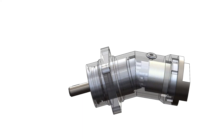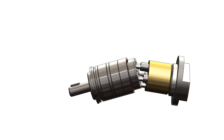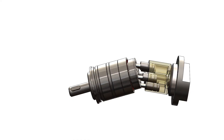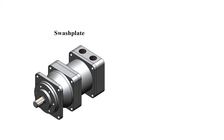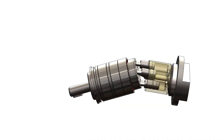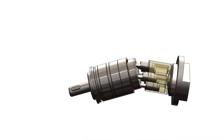An axial piston pump is a pump that has a number of pistons in a circular array within a cylinder block. There are two designs that are most relevant: the swash plate configuration and the bent axis configuration. In both cases, the angle of the swash plate or the bent axis mechanism determines the effective stroke of the piston.